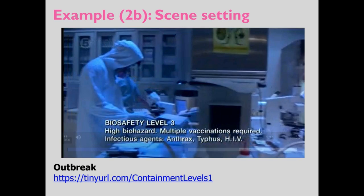Another example: thinking about microorganism research, there are containment levels you're restricted to depending on risk factors associated with a particular organism. At the start of the film Outbreak, they walk the audience through the four safety levels. It's American-context but the levels are similar to the UK — not 100% accurate, but very helpful in setting the scene, and the inaccuracies are themselves things students can look at in more detail.